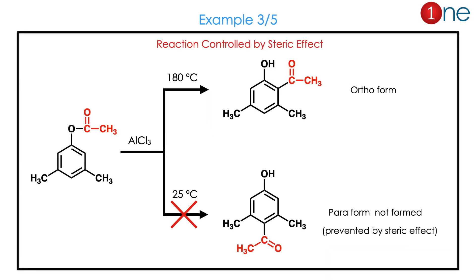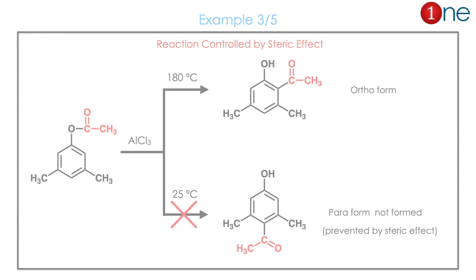In the next question, you have a substituted ester in the meta position. Once those positions are occupied, the rearrangement cannot be effective at the para position due to steric reasons. So only the ortho isomer is formed. You can control the reaction by the steric effect.